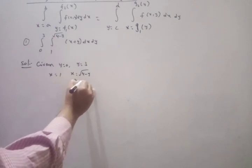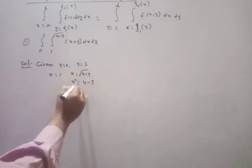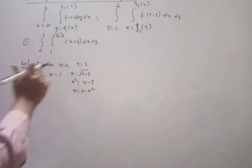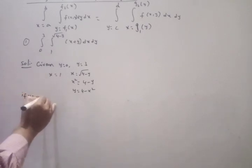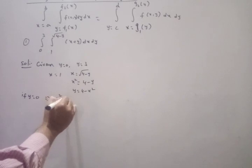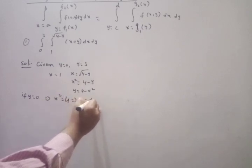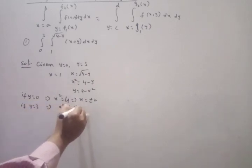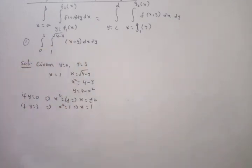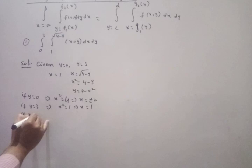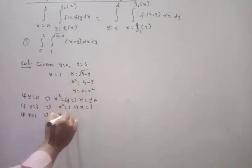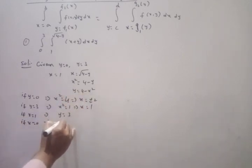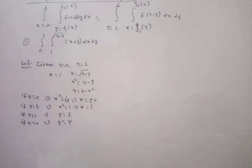If I square both sides of X = √(4−Y), I get X² = 4−Y, so Y = 4−X². To find the key points: if Y = 0, then X² = 4, so X = ±2. If Y = 3, then X² = 1, so X = 1. If X = 1, then Y = 4−1 = 3. If X = 0, then Y = 4. So the points are (±2, 0), (1, 3), and (0, 4).